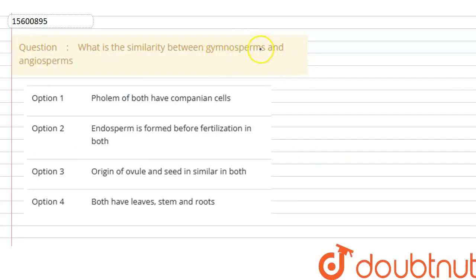What is the similarity between gymnosperms and angiosperms? What is the similarity between them? If you look at option 1, the phloem of both have companion cells which is incorrect.